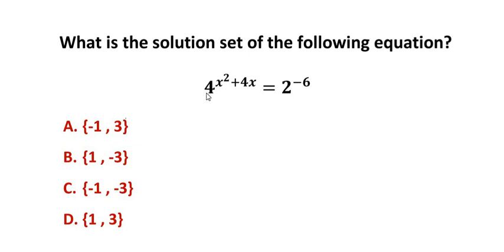To solve this, we have to get the 4 in terms of 2's power. So we can write 4 as 2² raised to the power of x² + 4x. This is equal to 2 to the power of negative 6.